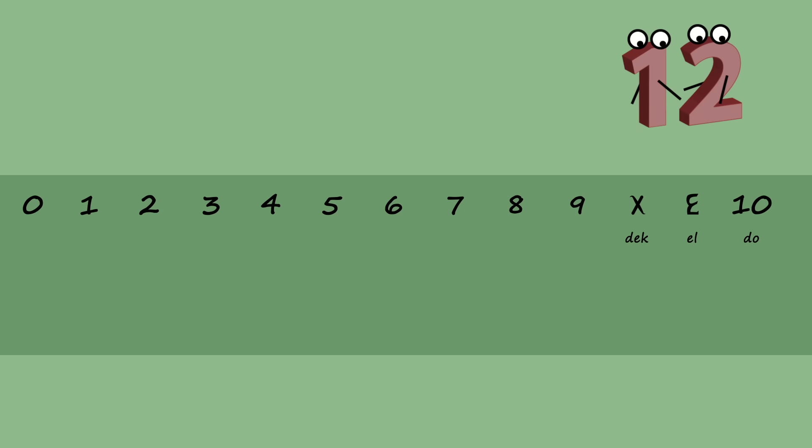So counting upwards from Doe, we have Doe 1 for 11, Doe 2 for 12, Doe 3 for 13, all the way up to 2 Doe for 20.